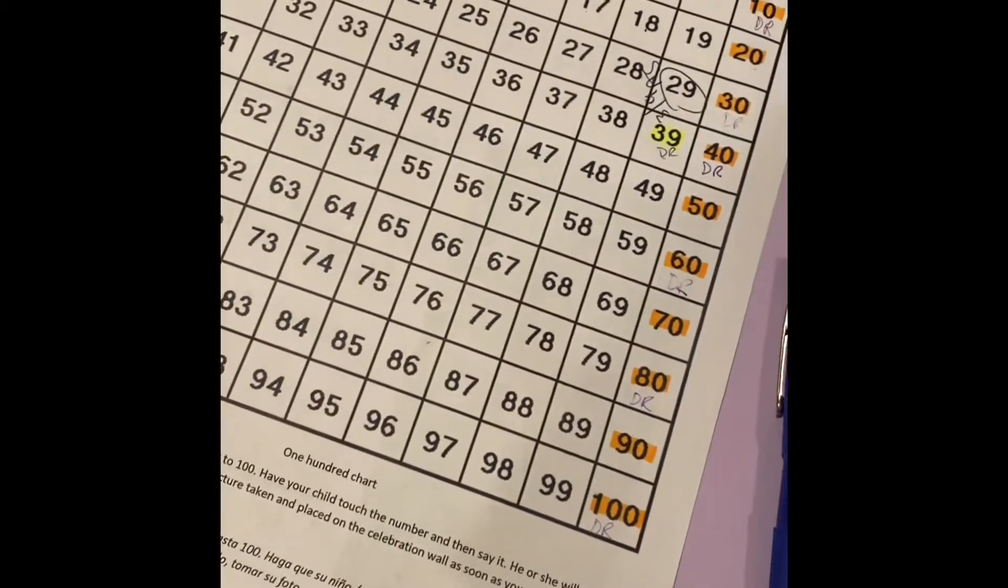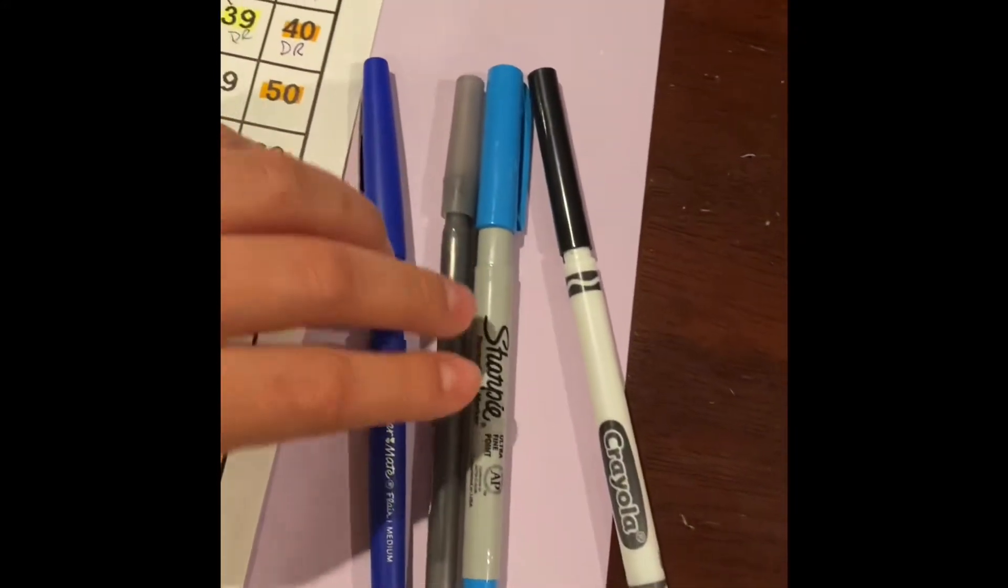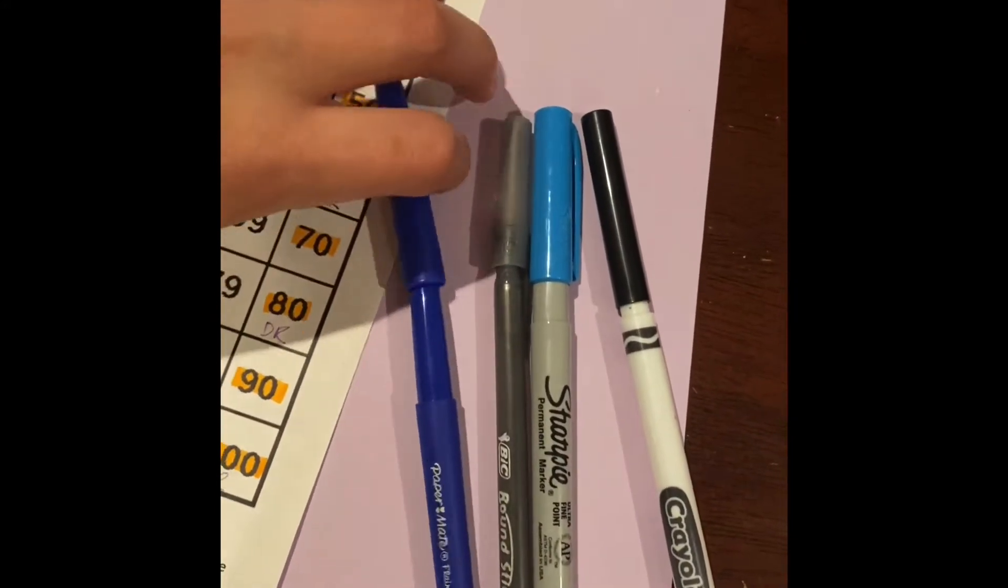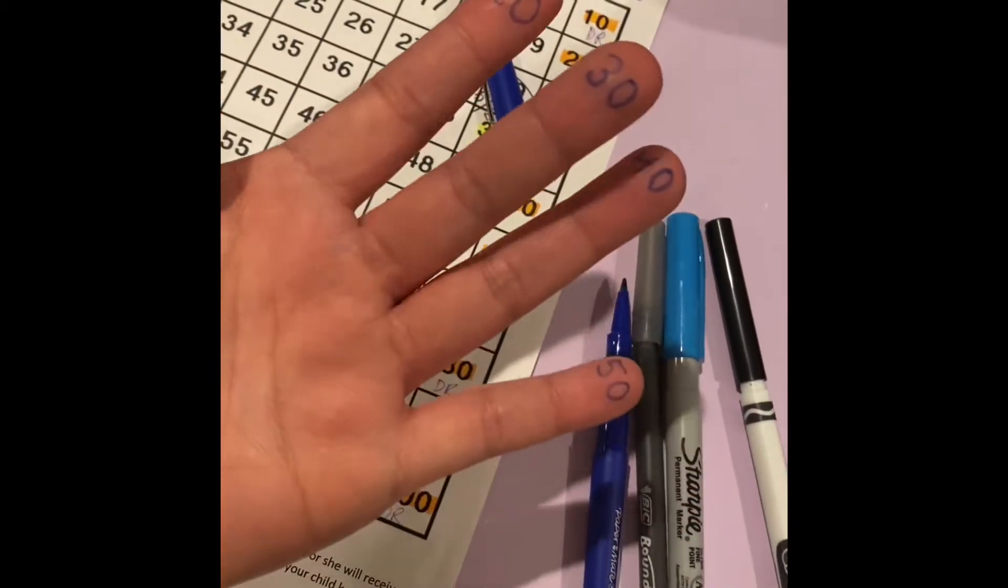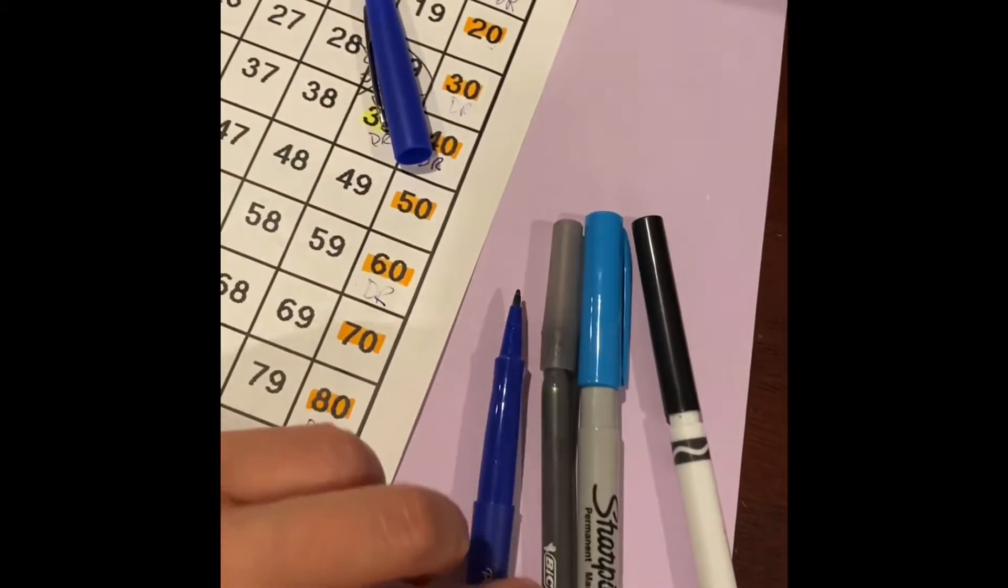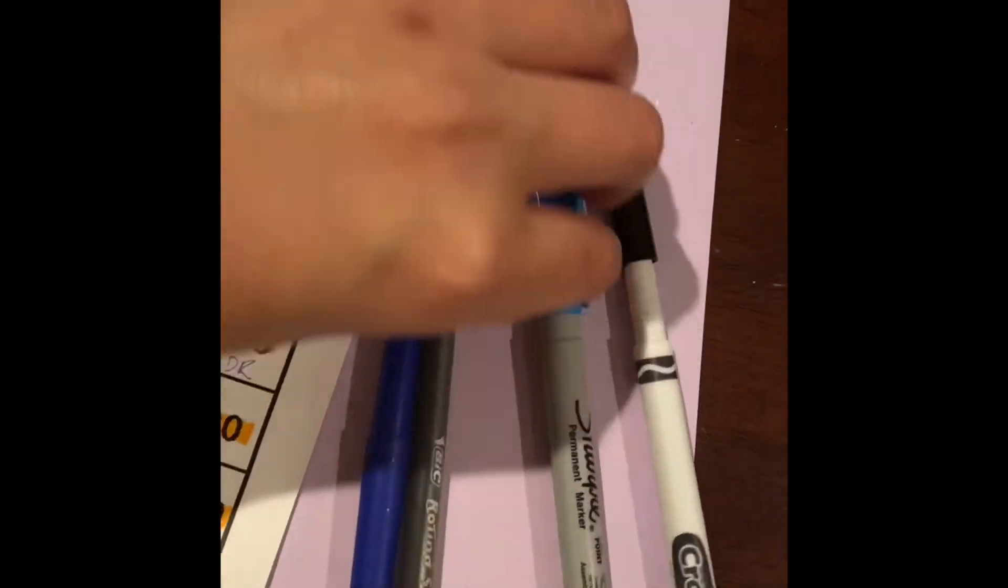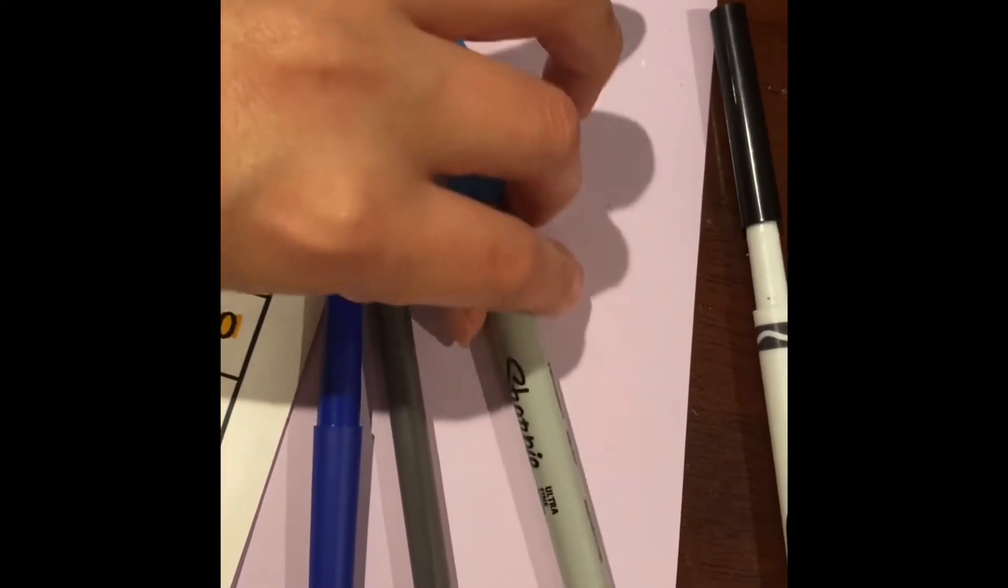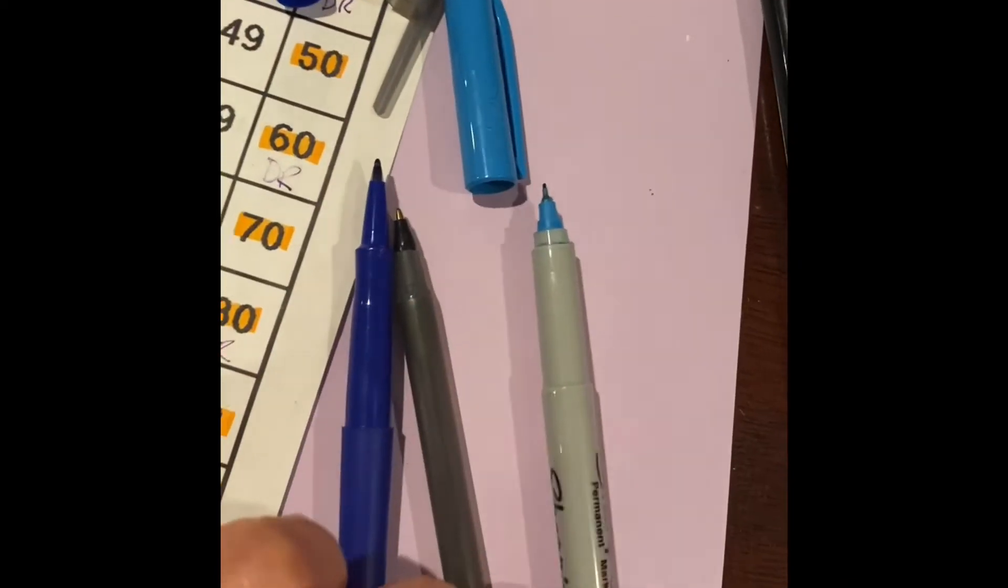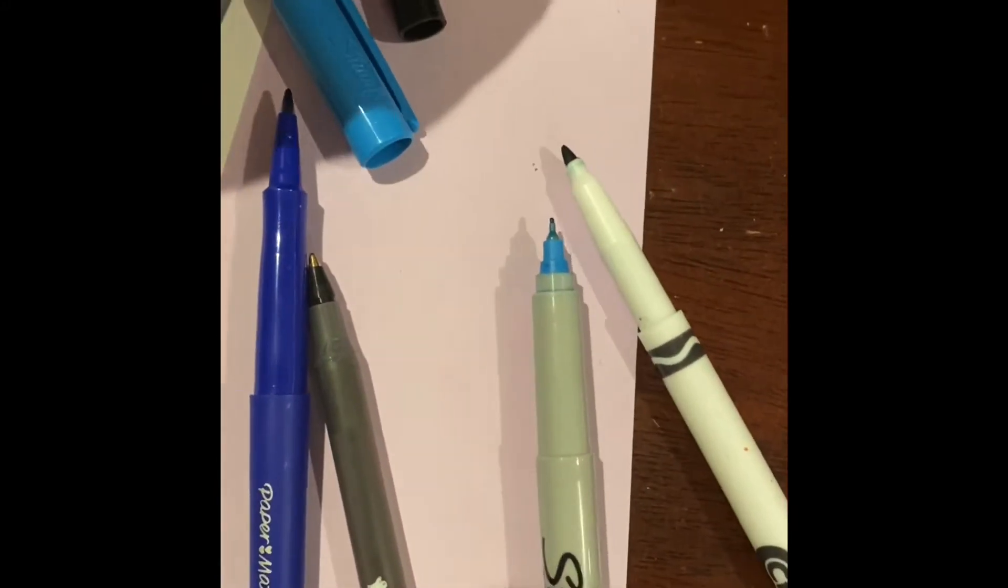Hi guys, for this activity you will need a hundreds chart and something with a fine point that will be small enough to write on your fingers. So I have a very thin marker, a regular pen, or a fine, ultra fine permanent marker. As long as it's fine and you're able to write on your fingers, we can start.